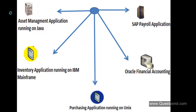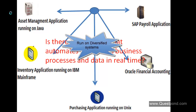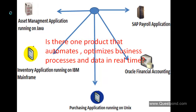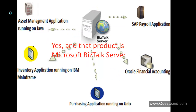All these applications in this organization are somewhere dependent on each other and at some point need data from each other. Also, this organization has diverse systems running on different technologies — one runs on Java, another on IBM mainframes, one on Unix, one on Oracle, and another on SAP. Definitely I would want a product that automates and optimizes business processes and data in real time. And which product is that? Yes, that is Microsoft BizTalk Server.